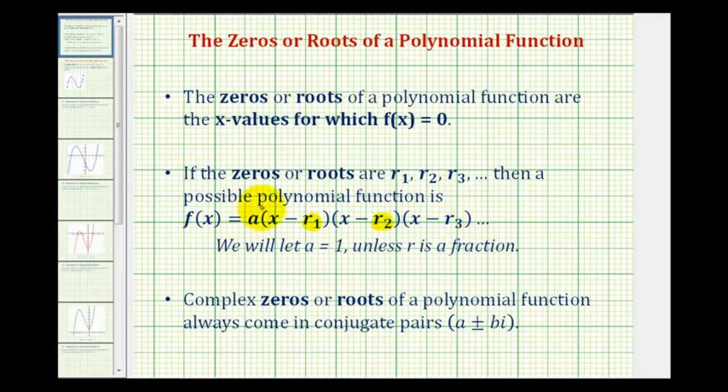Also, it's possible to include a constant here which would not affect the zeros of the function. We always let a equal one unless we have fractions in our binomial factors which we want to clear. And then again, if we have complex zeros, these will always come in conjugate pairs. So if a plus bi is a zero, then so is a minus bi.